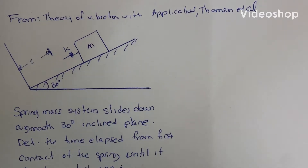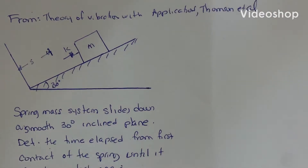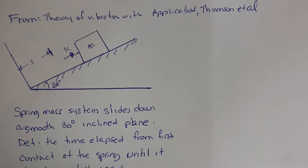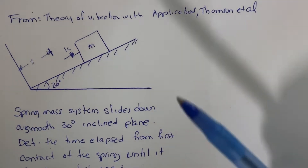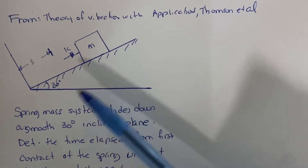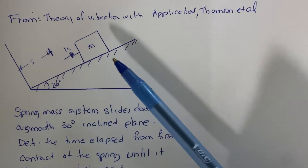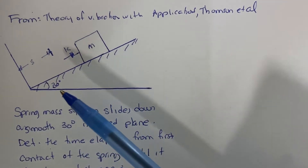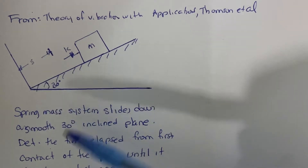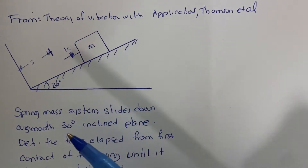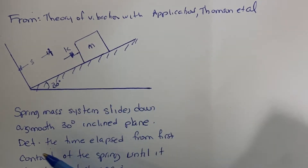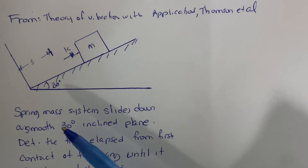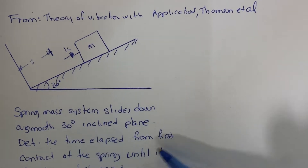In this system, we have a block of mass M in static equilibrium, and eventually the block is going to slide down to a smooth inclined plane of 30 degrees and make contact with a spring. The problem is asking us to determine the time elapsed from the first contact of the spring until it breaks contact again.